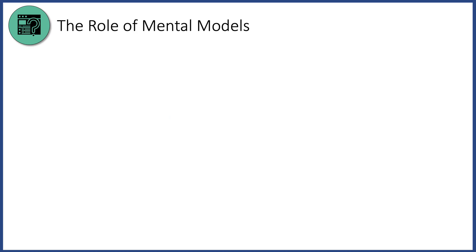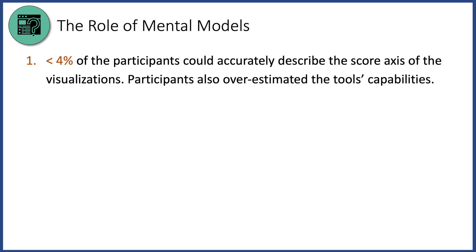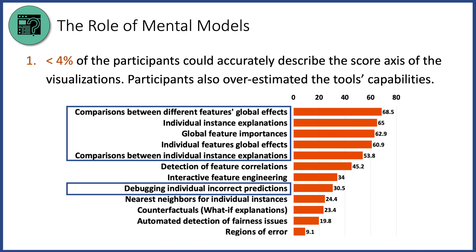We conducted exploratory qualitative and quantitative analyses on data about mental models. Upon coding their answers for accuracy, we found that less than 4% of participants could accurately describe the score axis of the visualizations. Moreover, participants overestimated the capabilities of these interpretability tools. People attributed many capabilities to the tools beyond what they actually offer — some, such as automated detection of fairness issues, are far from being actual features of these tools.